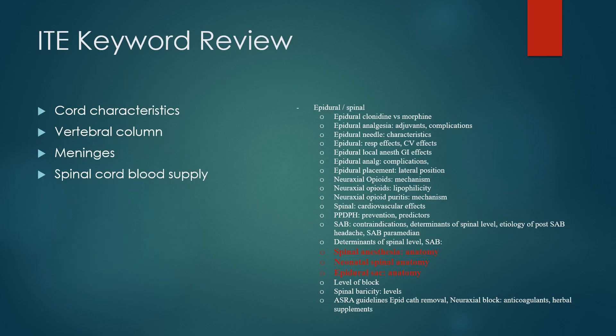Topics for this review will be general spinal cord characteristics and organization, anatomy of the vertebral column, a look at the meningeal layers of the central nervous system, and finally the blood supply to the spinal cord.